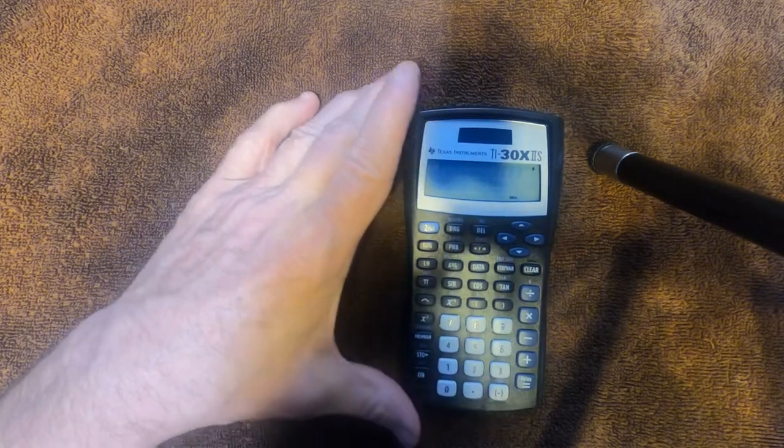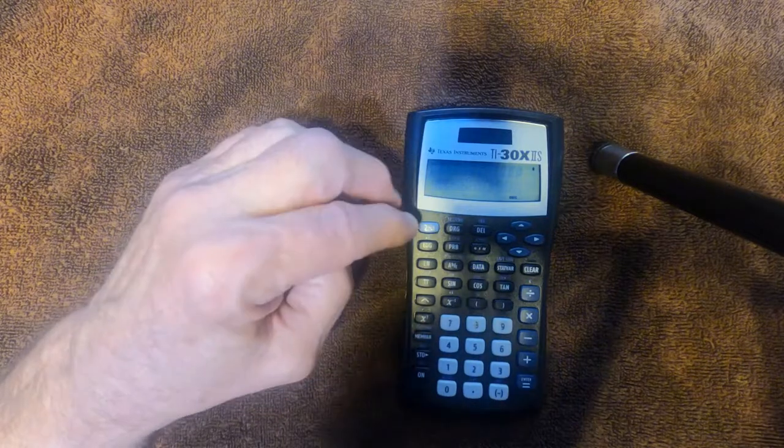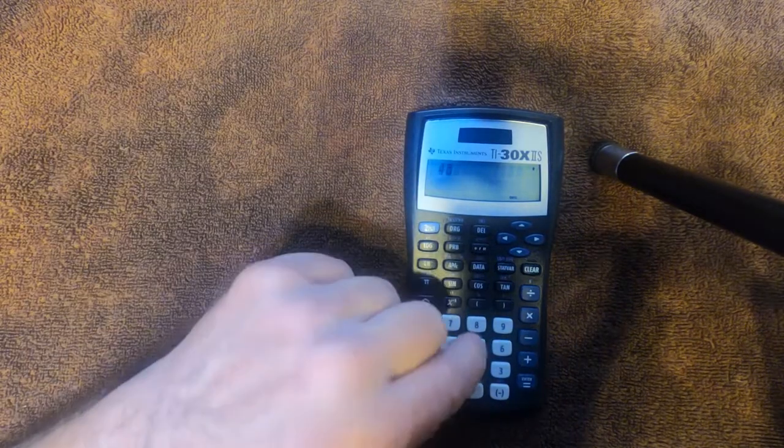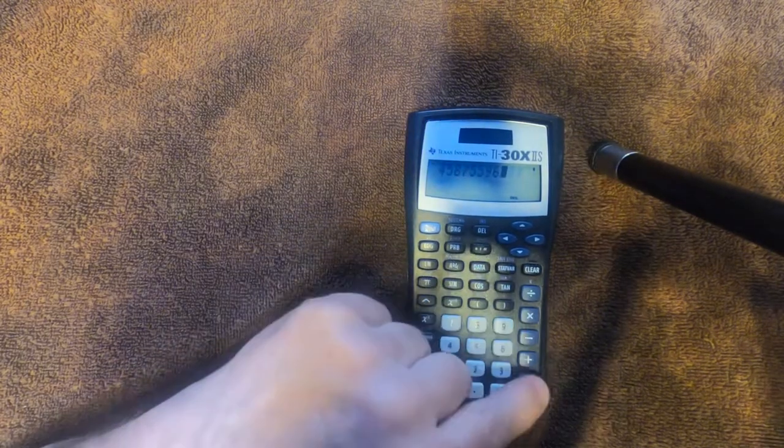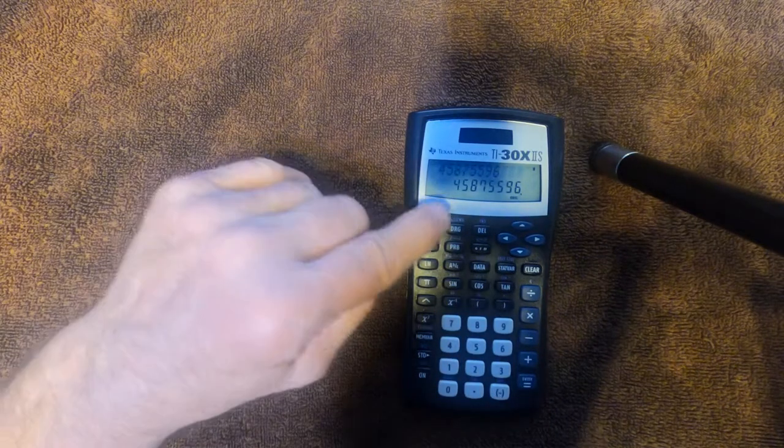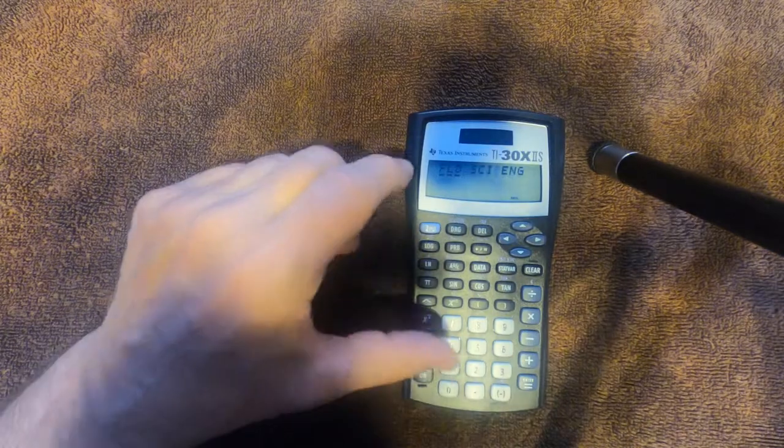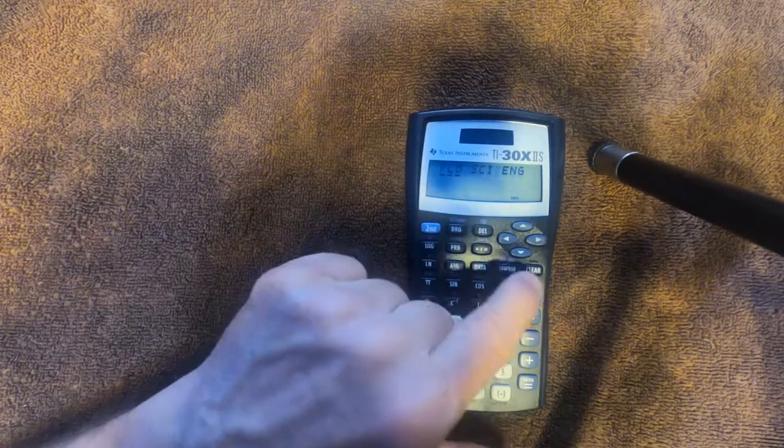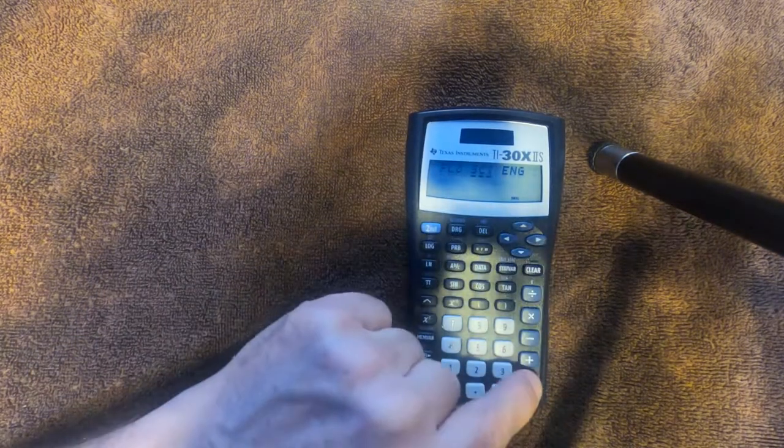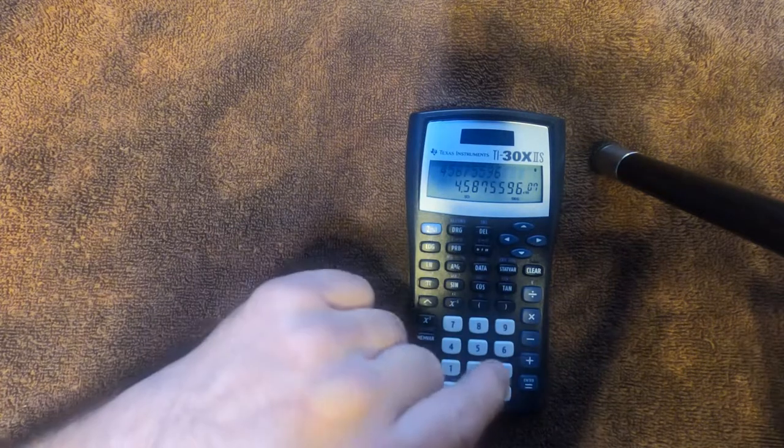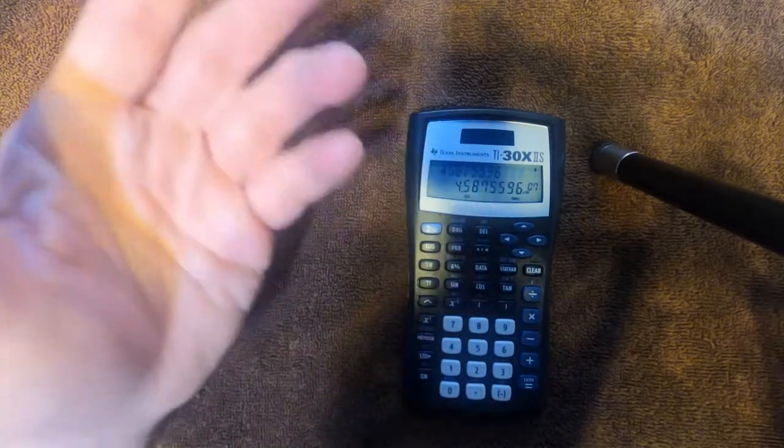Another thing this can do is go back and forth between decimal and scientific notation. Let's say we have this number right here, we want to write it in scientific. See this psi slash ENG? Second psi, and we want to underline SCI for scientific, press enter. There it is in scientific notation.